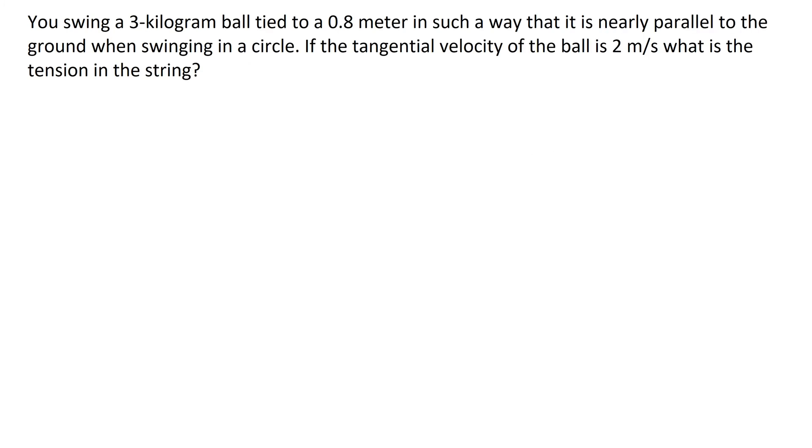So let's do an example. You swing a three kilogram ball tied to a 0.8 meter string in such a way that it's nearly parallel to the ground when swinging in a circle. What this means, nearly parallel to the ground, is that you can basically pretend that this ball is going in a horizontal circle, a perfect horizontal circle. And there is some tension in the rope. The radius of this circle is the length of the string, so 0.8 meters.